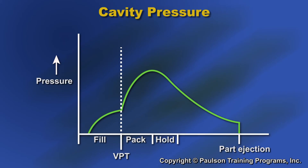Here is a graph of cavity pressure during mold filling. If you use cavity pressure to switch to VPT, that would be about here, just before the mold is full. This method requires a cavity pressure transducer in the mold.